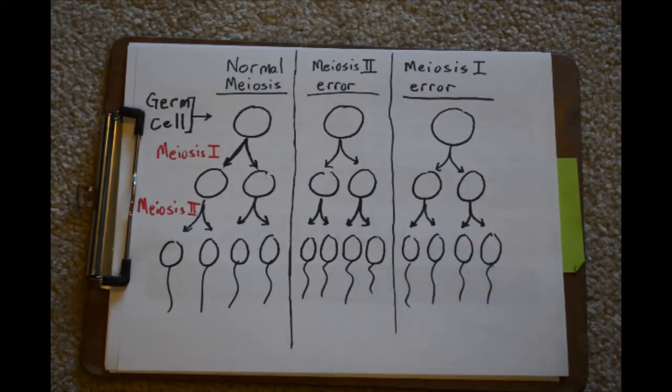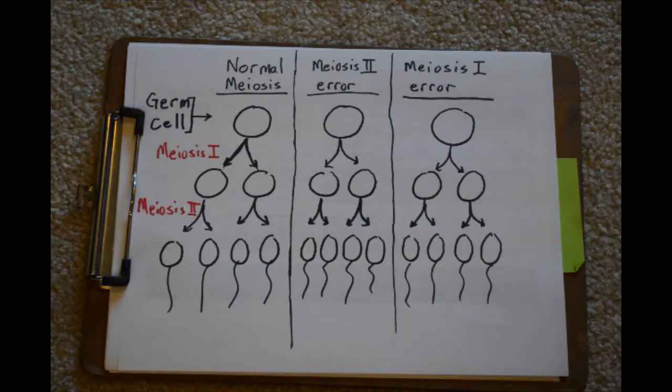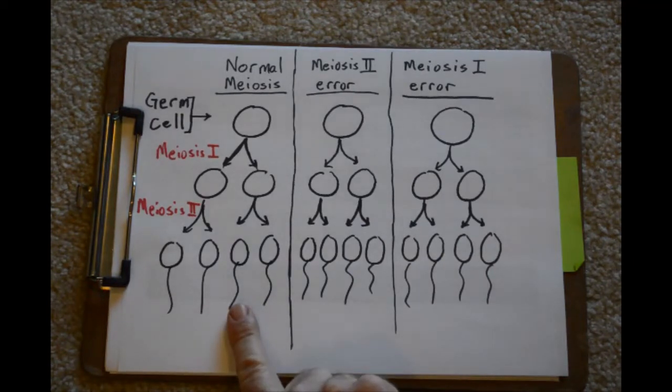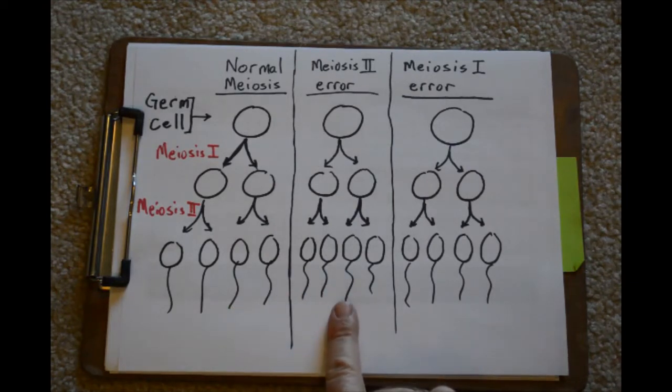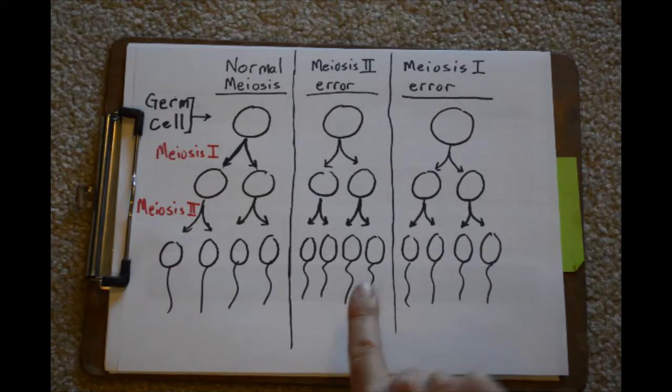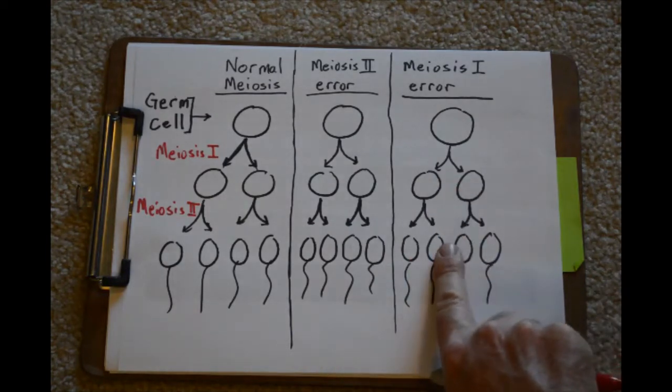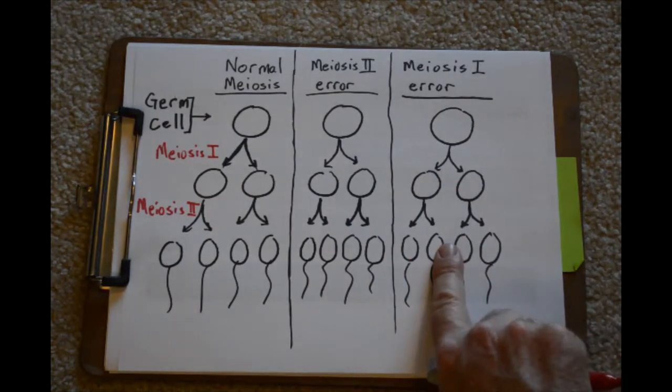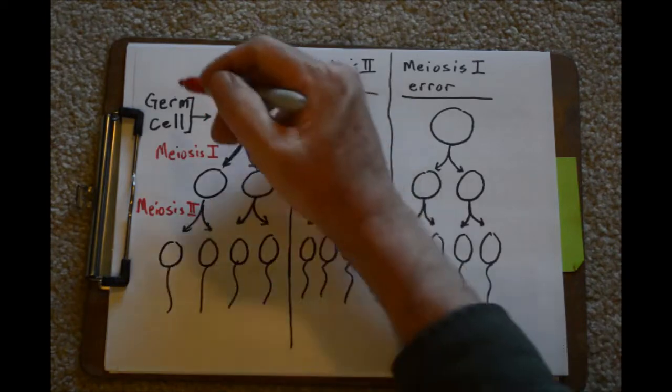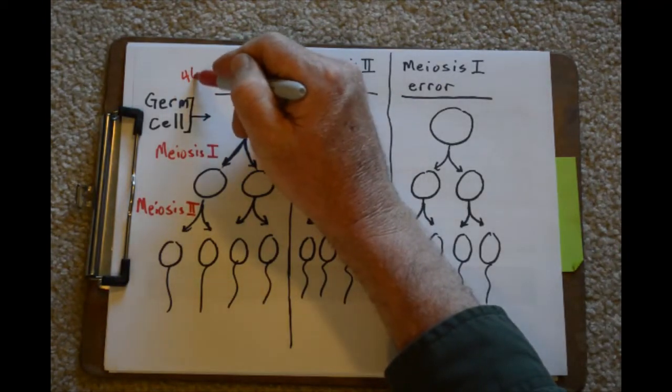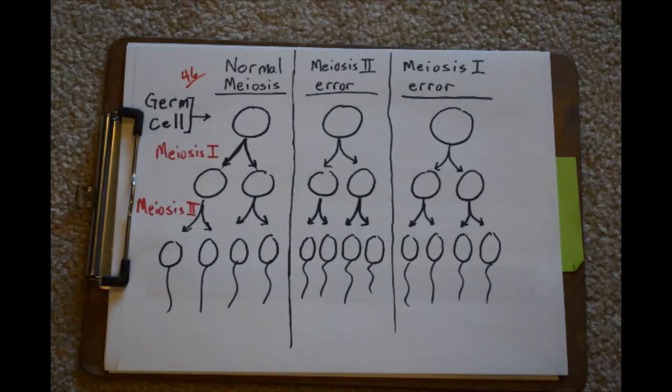So start off with a drawing like this, make one for yourself. As we walk through normal meiosis, fill this one in. I'll walk you through an error in meiosis II, and then I want you to do this one for yourself. Now you could do this for a normal human and have 46 chromosomes, but we're going